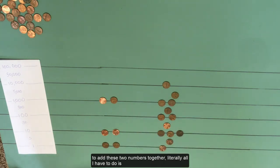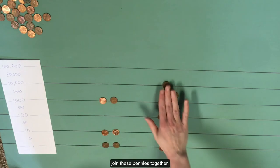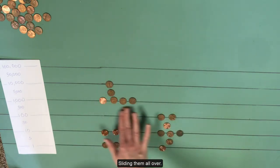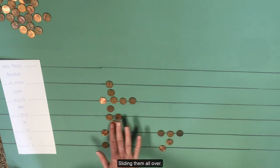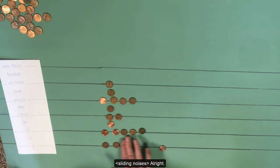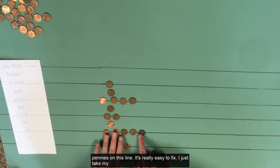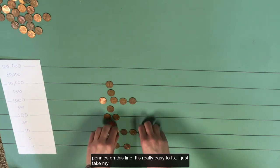So if I want to add these two numbers together, literally all I have to do is join these pennies together. Sliding them all over. Now I do have one little problem here, which is that now I have five pennies on this line. That's really easy to fix.